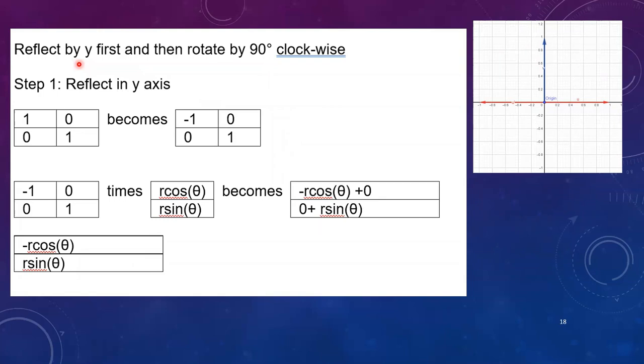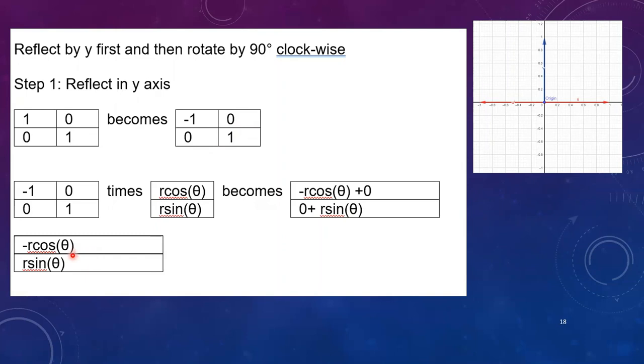So in order to reflect in y and then rotate by 90, we're going to reflect in y. So this time our 1 0 becomes -1 0 and our 0 1 is the one that stays where he is and there we get our intermediate step. And then we come through and rotate by 90, so you can see what the new matrix would be and then we multiply by the intermediate step and again we get the same answer.